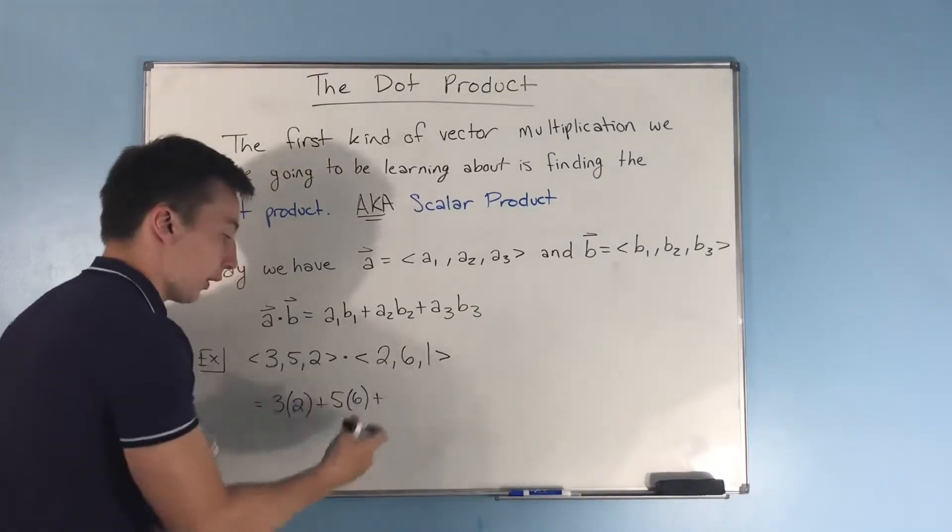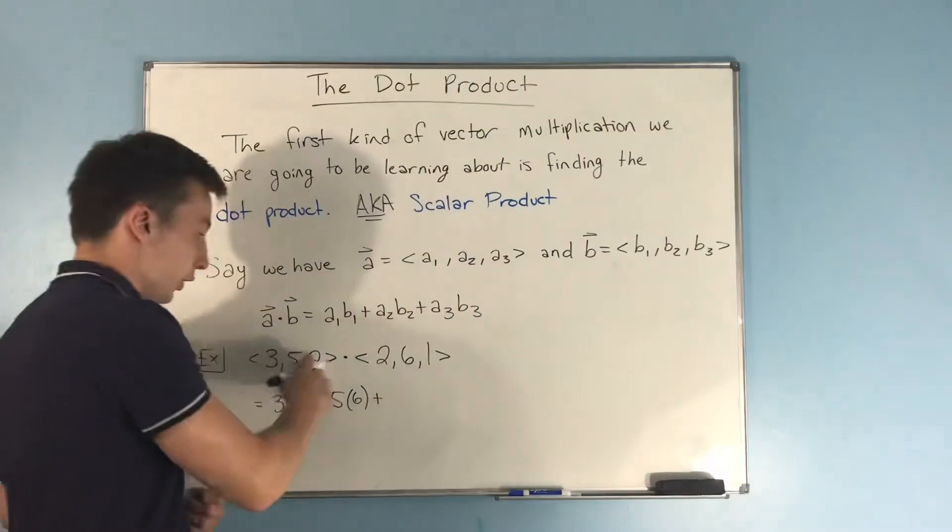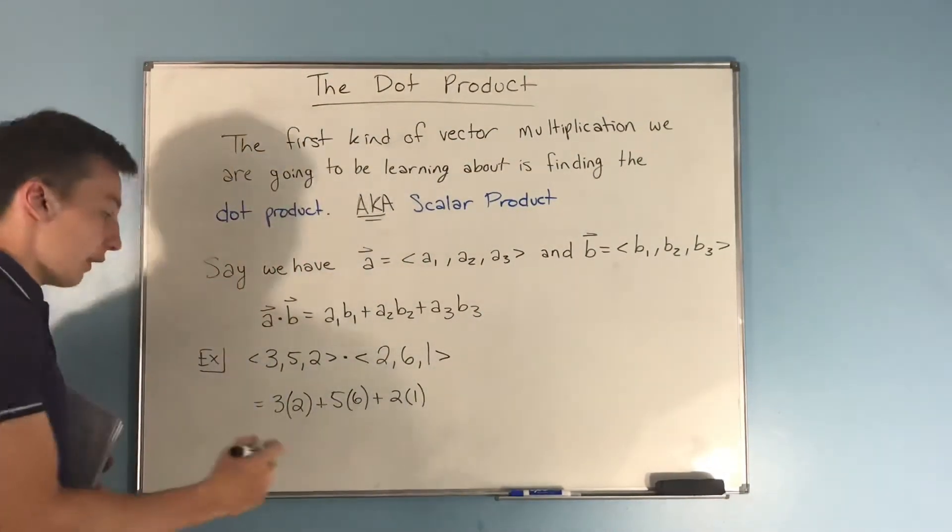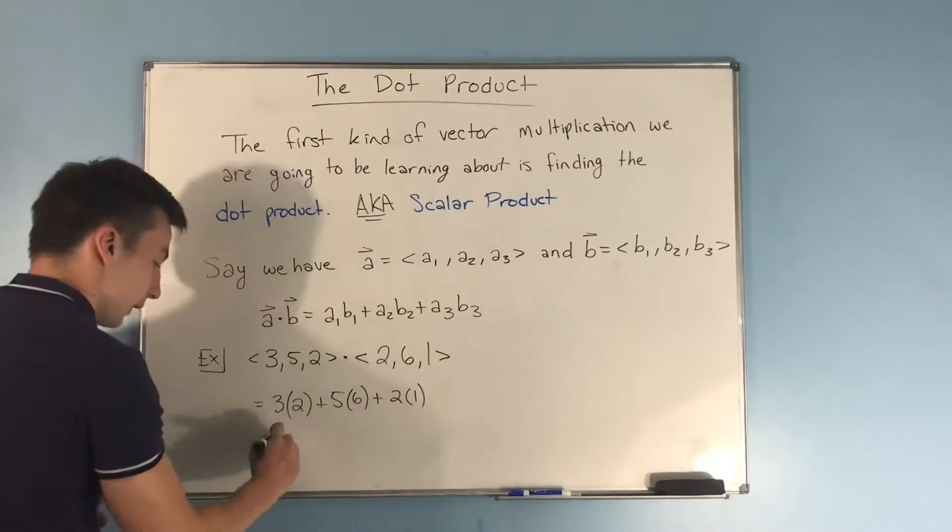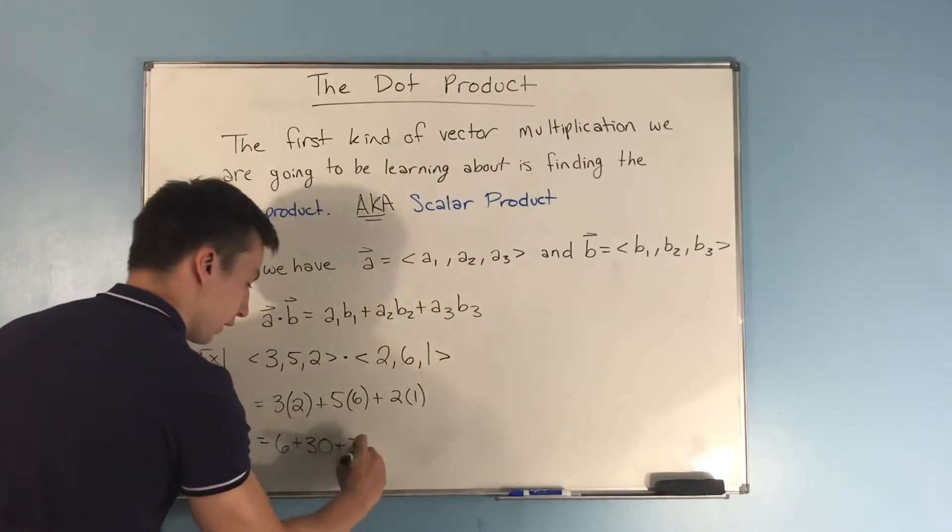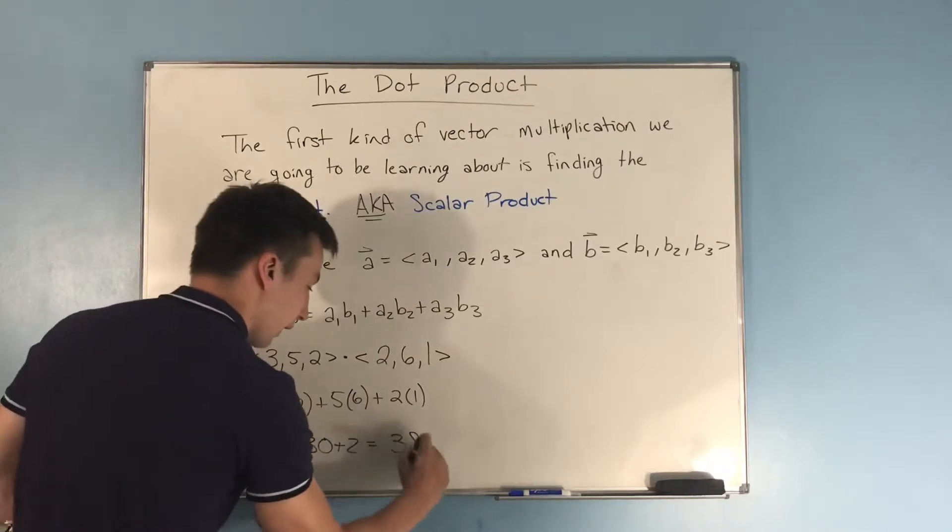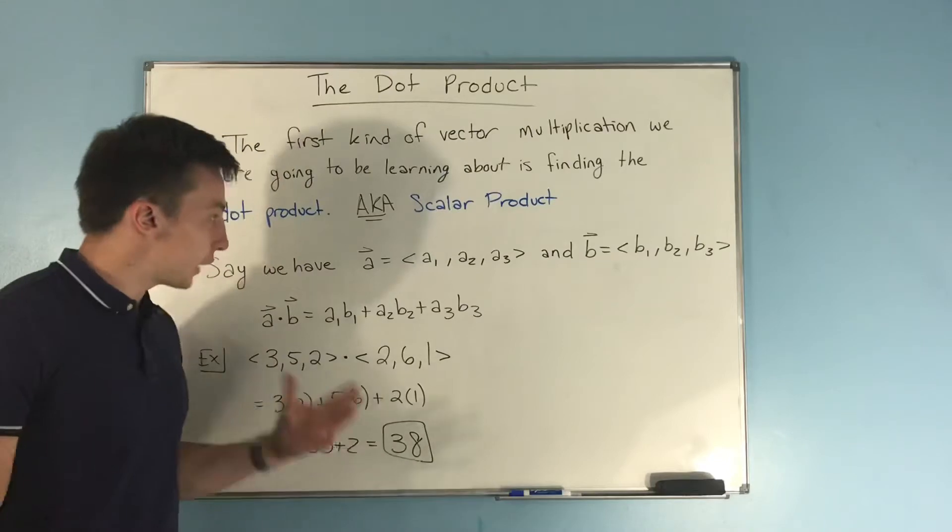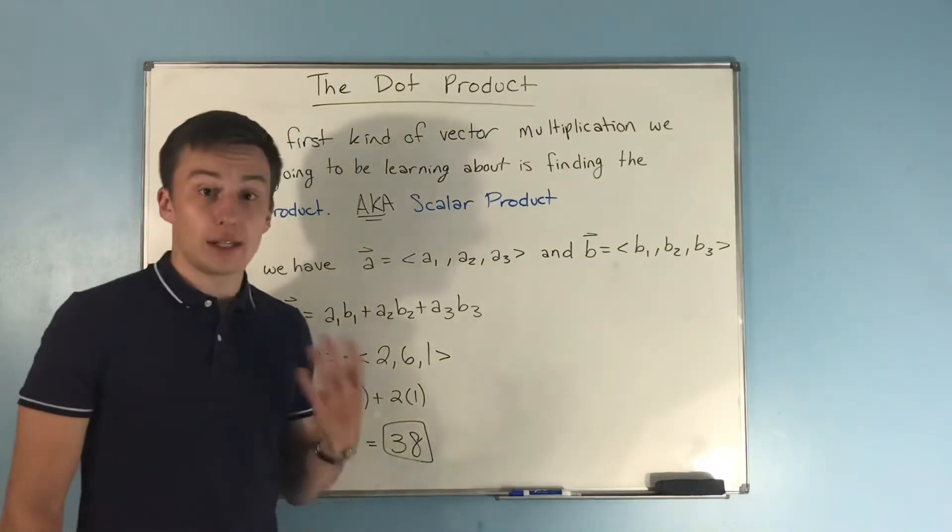multiply our third set of components and add it on: 2 times 1. That equals - well, 3 times 2 is 6, 5 times 6 is 30, and 2 times 1 is 2 - so this equals 38.